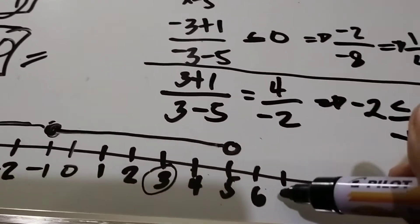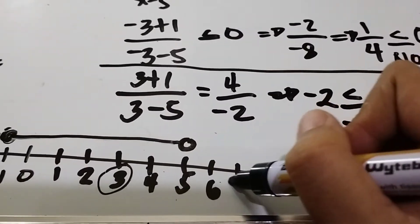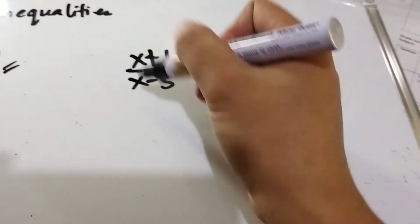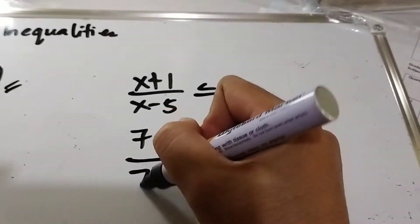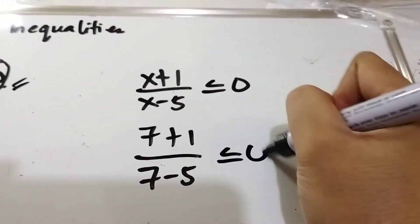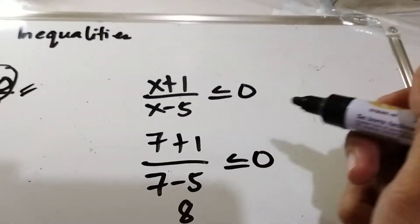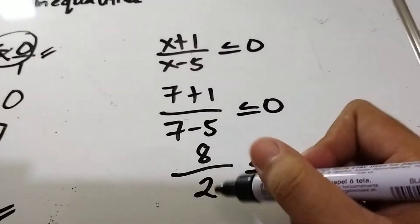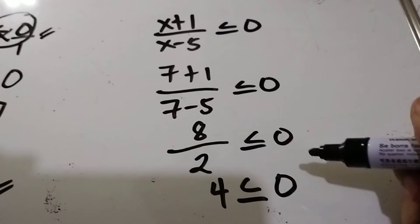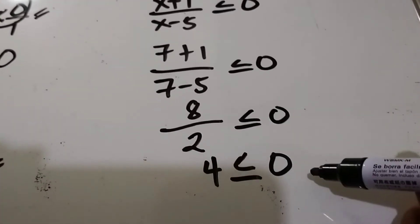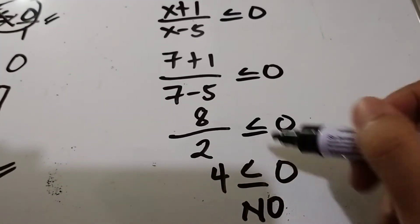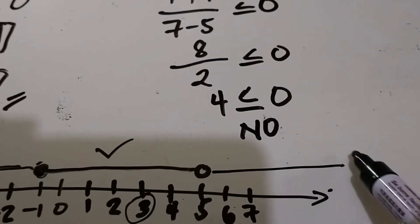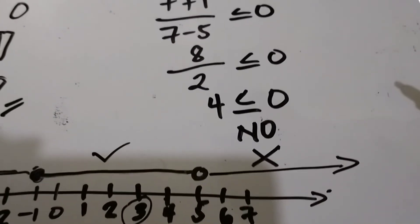Now let's try the right part, from positive 5 to positive infinity, using x equals 7. Substituting: 7 plus 1 over 7 minus 5 is 8 over 2, equal to 4. Is 4 less than or equal to 0? The answer is no — 4 is greater than 0. So this part is not included in our possible value of x.